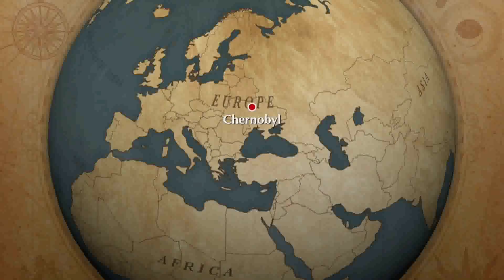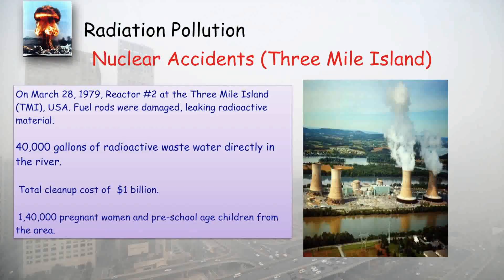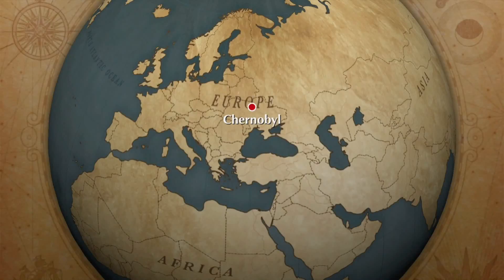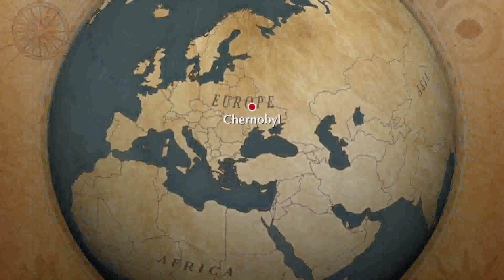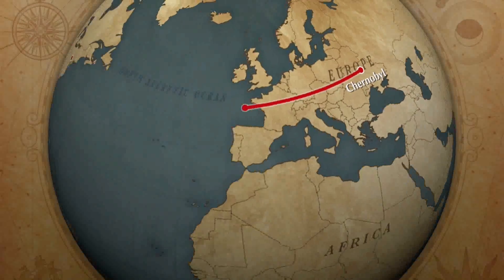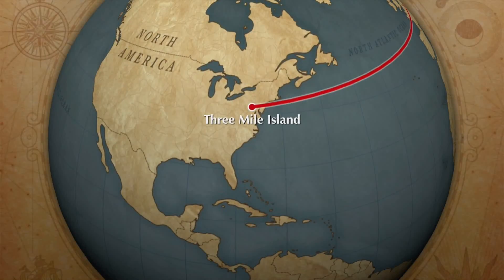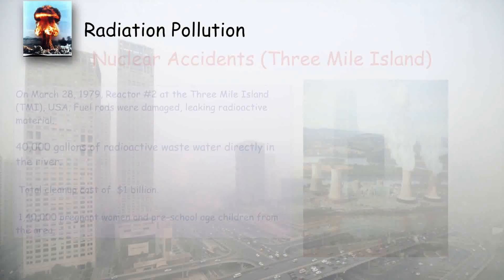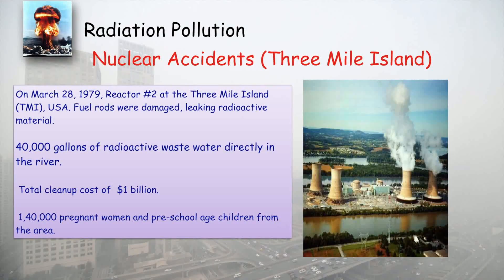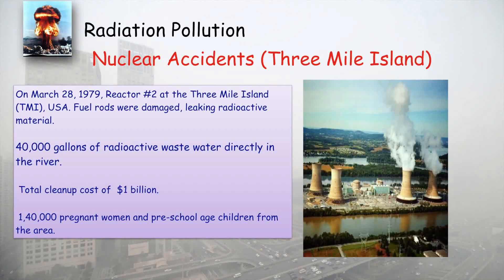The Three Mile Island accident occurred in 1979, where the reactor was damaged and leaked radioactive material into the nearby river. Almost 40,000 gallons of radioactive waste went directly into the river, exposing approximately 140,000 people — including children — across the surrounding area. This was again a major disaster of radioactive pollution.